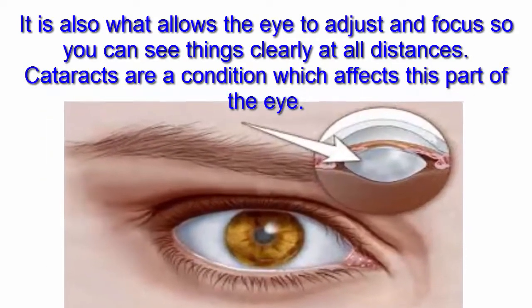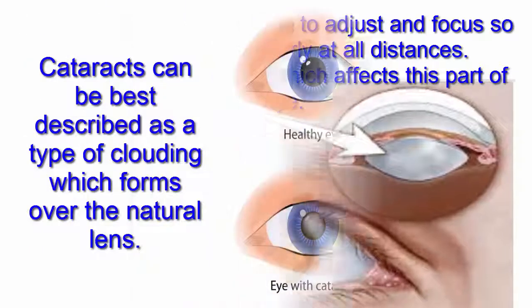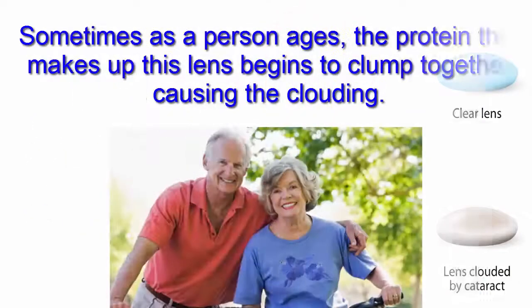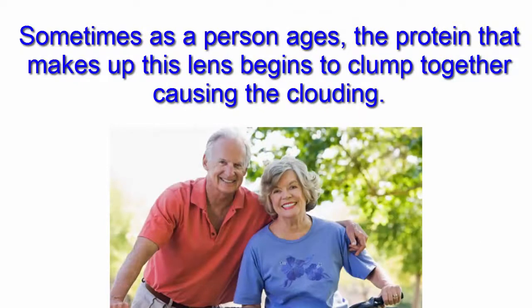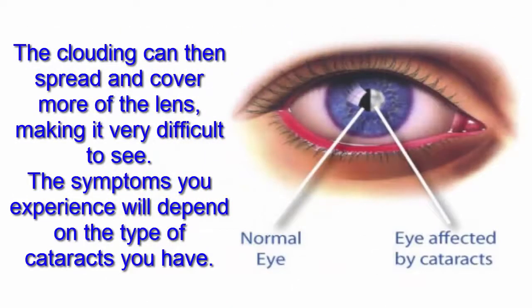Cataracts are a condition which affects this part of the eye. Cataracts can be best described as a type of clouding which forms over the natural lens. Sometimes as a person ages, the protein that makes up this lens begins to clump together, causing the clouding. The clouding can then spread and cover more of the lens, making it very difficult to see.